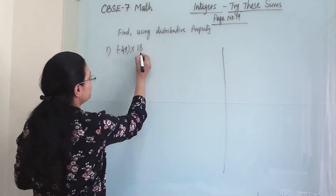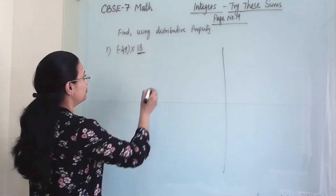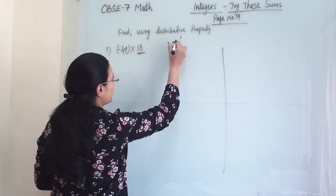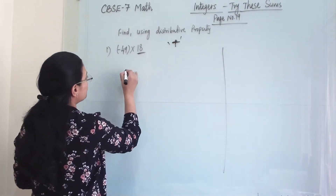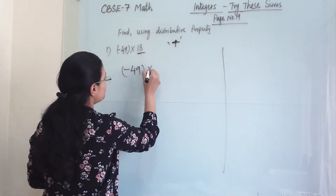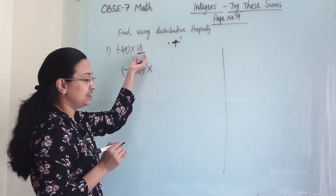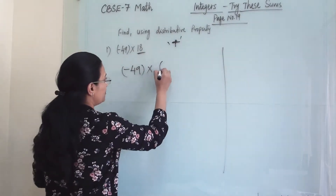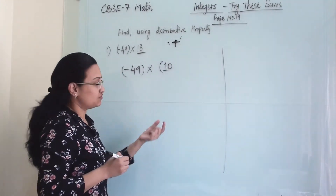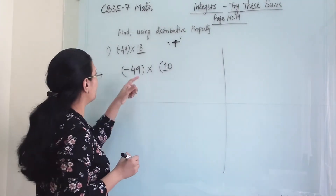We have to expand this number. First we will do it with addition. So, minus 49 into — if we want to use addition, then one number has to be in its tens: either 10, 20, 30, and so on.